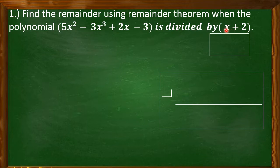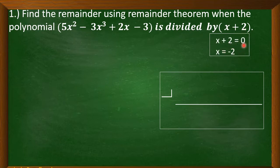We have to solve first for x. We copy x plus 2 and equate it with 0. Then 2 will be transposed to the right side and it becomes negative 2. So our x is equal to negative 2.